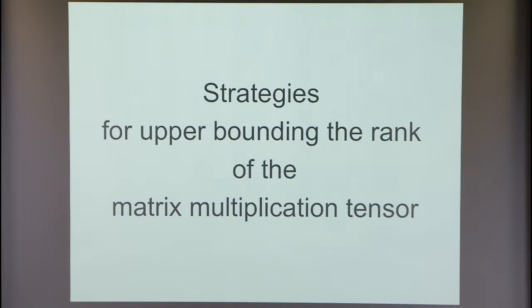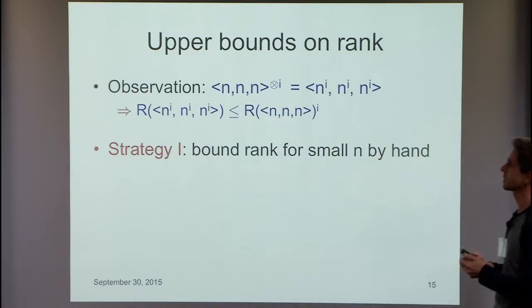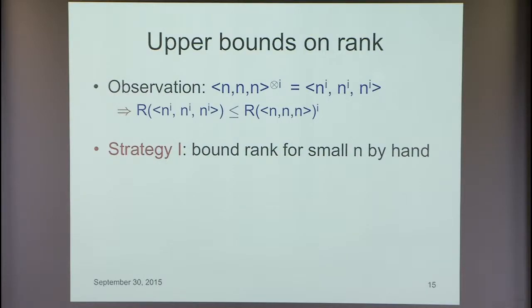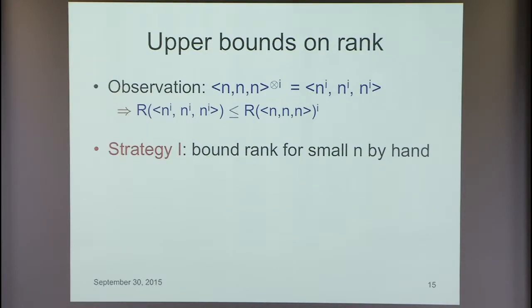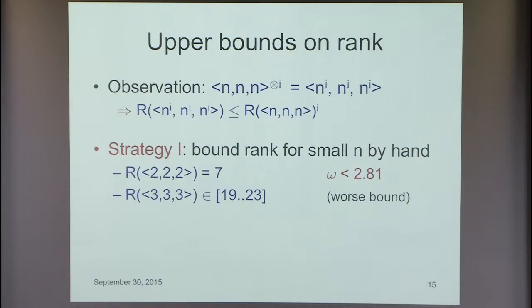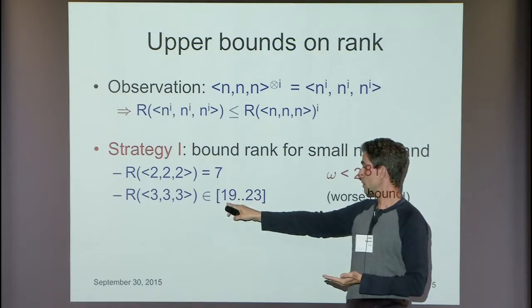Strategy 1: the i-th tensor power of the n×n matrix multiplication tensor equals the n^i by n^i matrix multiplication tensor. The rank of n^i matrix multiplication is at most the rank of n×n raised to the i-th power. So: find the rank for small n by hand. Strassen found that 2×2 matrix multiplication requires only 7 multiplications instead of 8, yielding Ω < 2.81. For 3×3 we don't know the answer—lower bound 19, upper bound 23—and that already gives a worse bound.